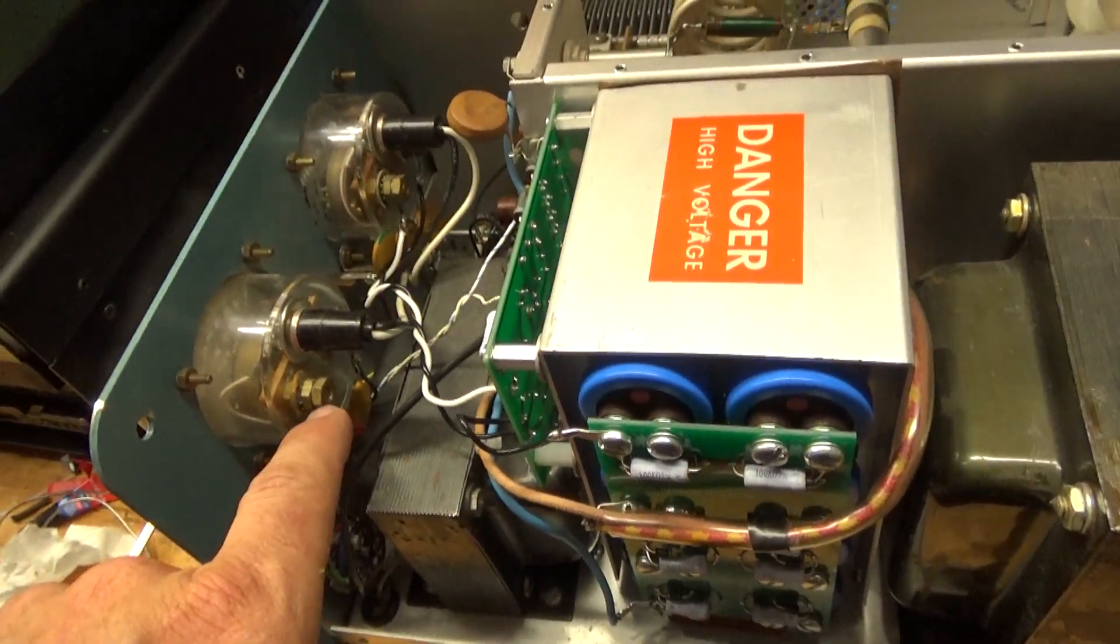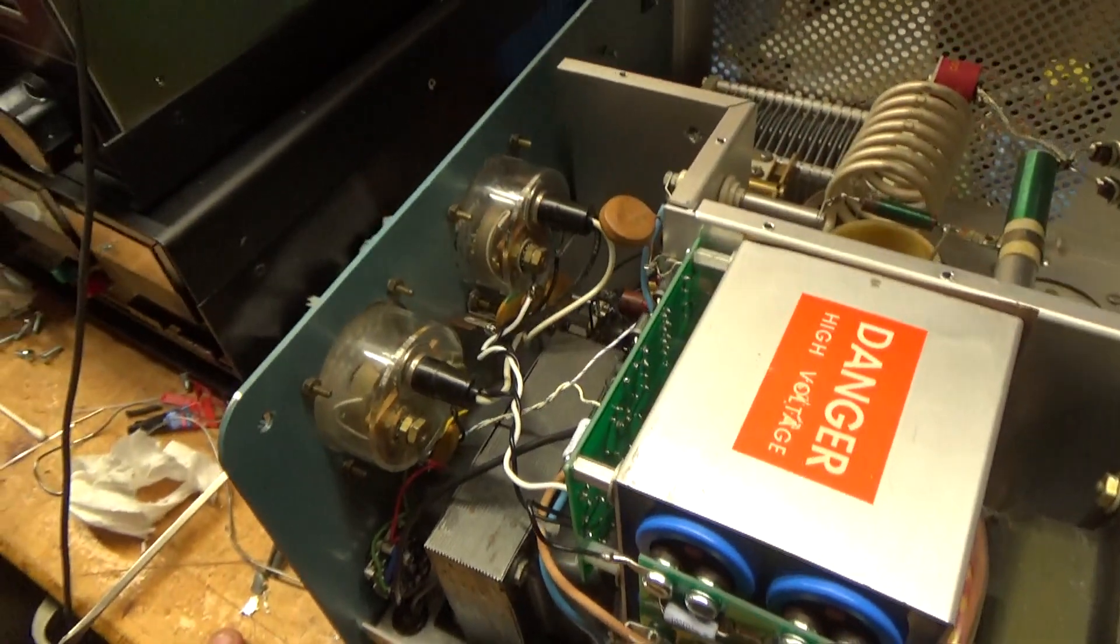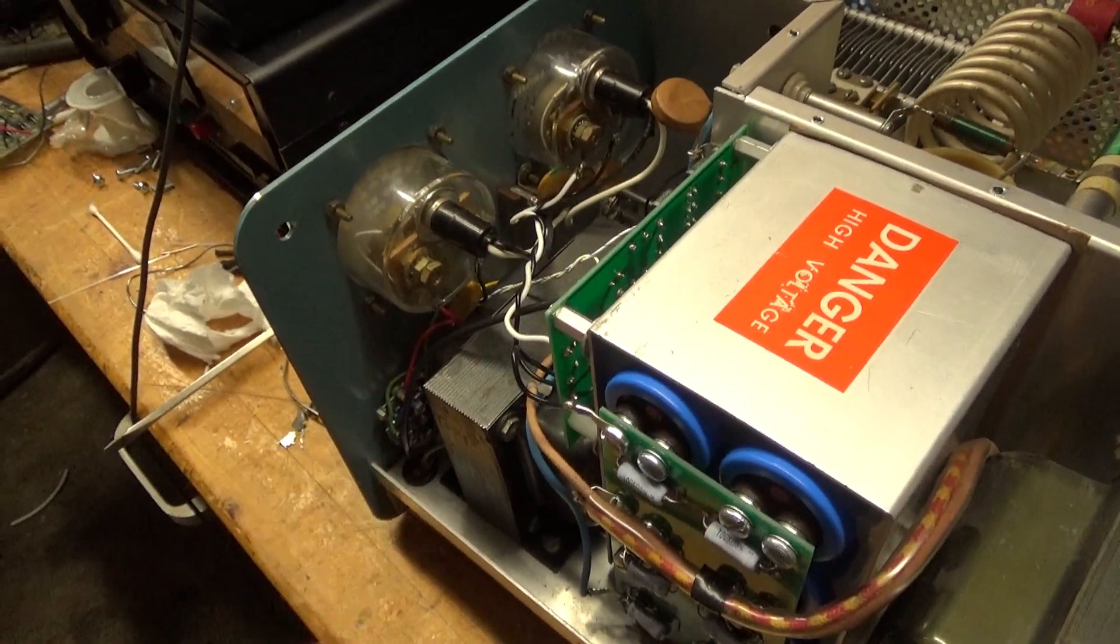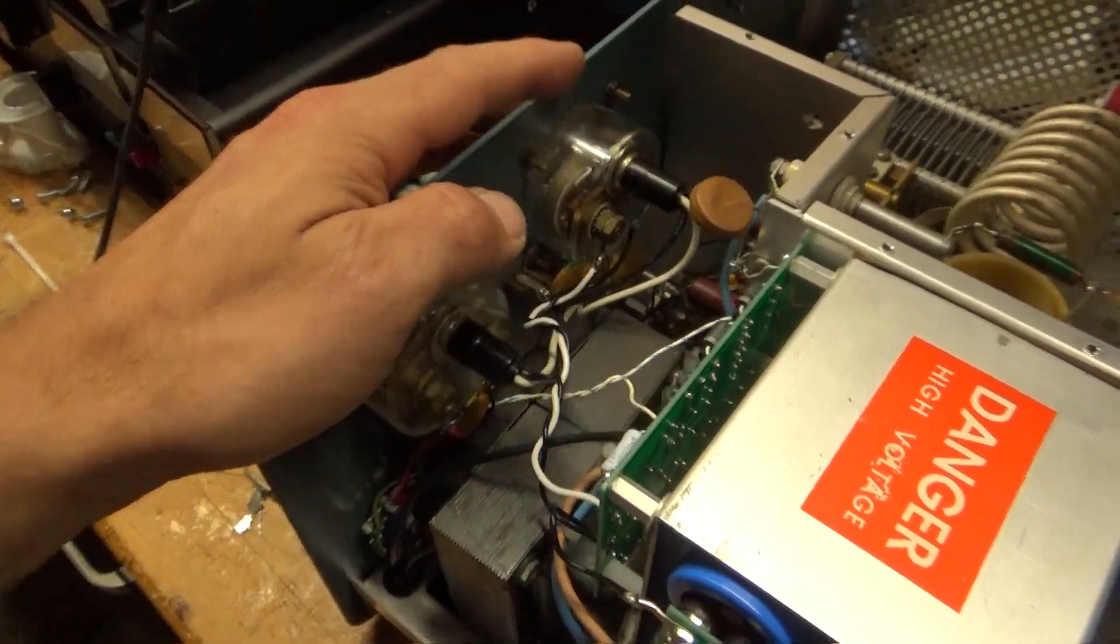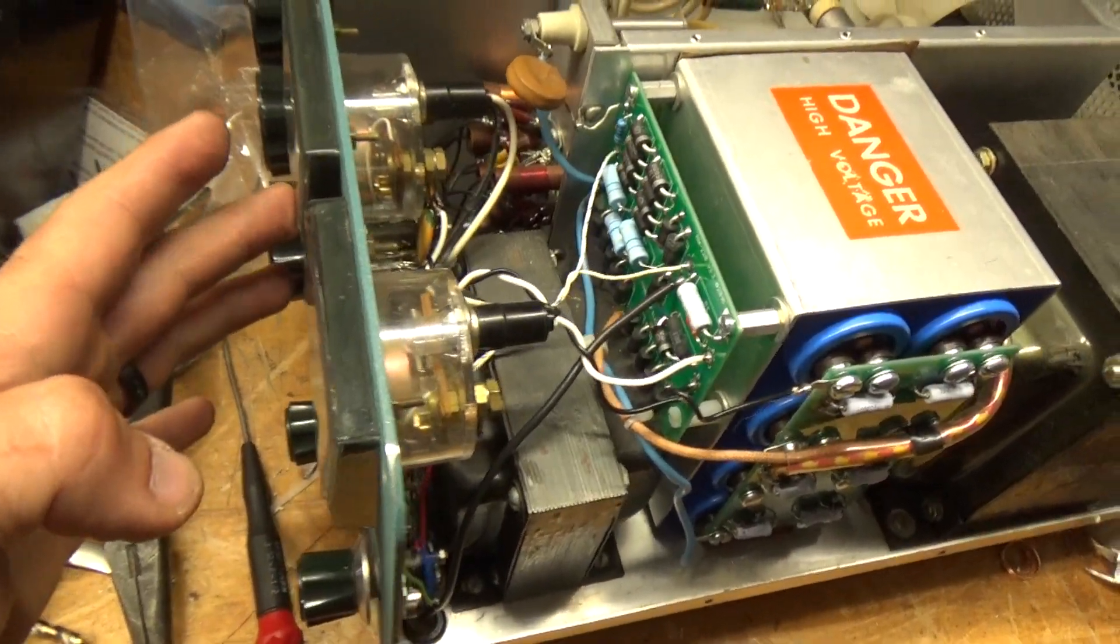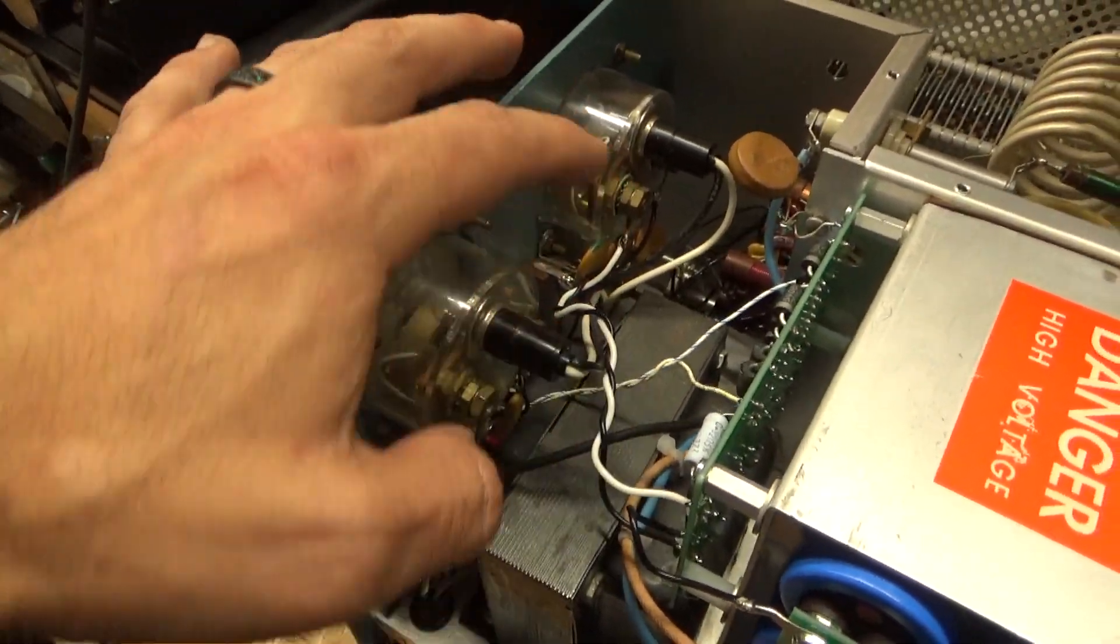So, I got rid of the diodes that were across the meters. They didn't look that great. They weren't even the proper type. The plate current meter leads were too short. So, I had to replace them.